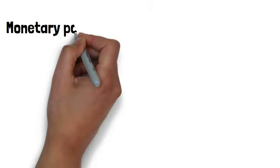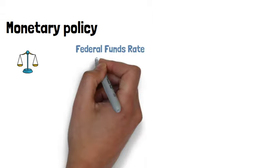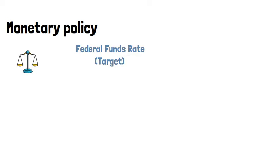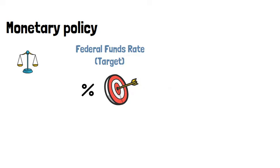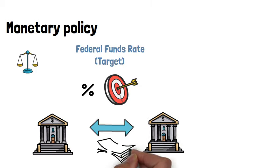So the central bank wants the interest rate to be low enough to promote economic activity, but at the same time manage the risk of inflation getting out of control. To achieve this goal, the central bank determines the federal funds rate, which is its target interest rate for banks to lend to each other.